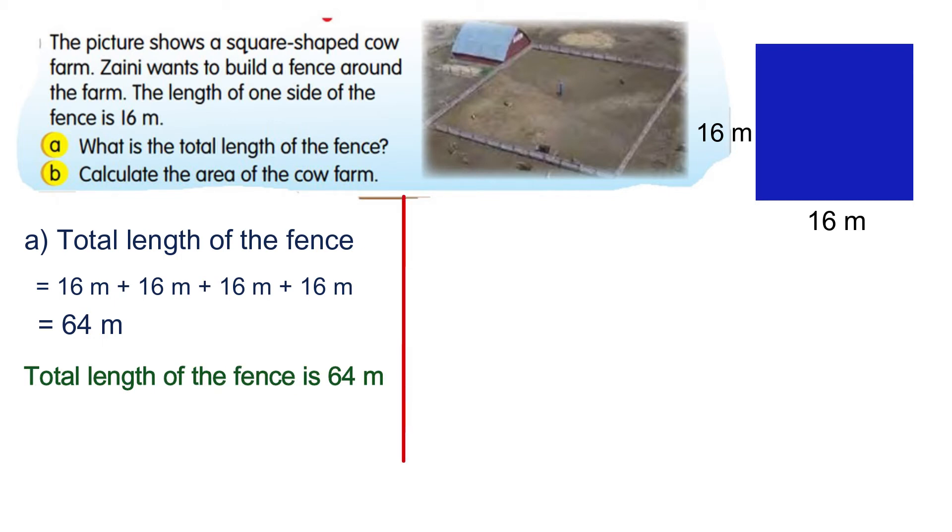Look at the square again. We have length 16 meters and width 16 meters. So area equals length multiply width, which is 16 meters multiply 16 meters. The answer will be 256 square meters.